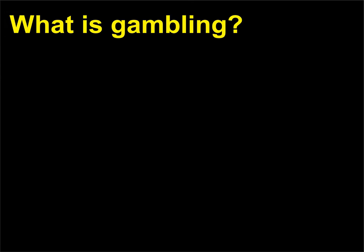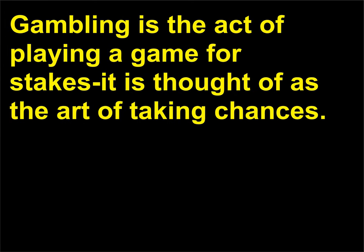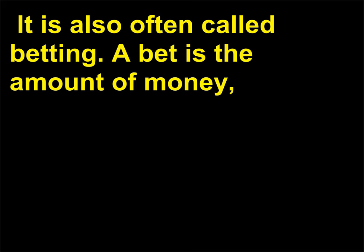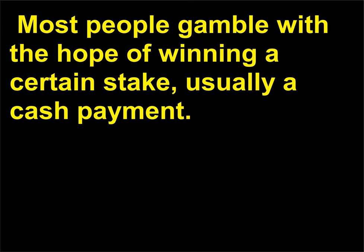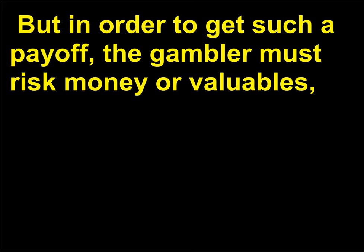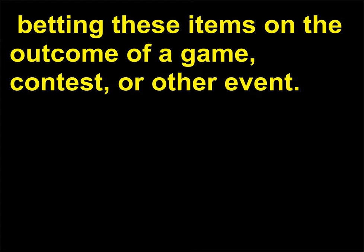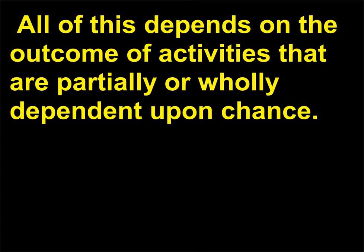What is gambling? Gambling is the act of playing a game for stakes; it is thought of as the art of taking chances. It is also often called betting. A bet is the amount of money or other object of value that is risked in a wager. Most people gamble with the hope of winning a certain stake, usually a cash payment. But in order to get such a payoff, the gambler must risk money or valuables, betting these items on the outcome of a game, contest, or other event. All of this depends on the outcome of activities that are partially or wholly dependent upon chance.